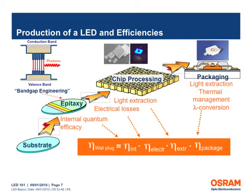To further improve the overall efficiency of the LED, optimization is required in all value-added steps beginning from the substrate through the package. To fabricate an LED, we start with a substrate on which several epitaxial layers are grown atom by atom. After various chip processing steps, the entire wafer is diced into single chips, also known as dies. Finally, the small semiconductor chip is assembled into a package for mechanical protection and electrical, thermal and optical interface.